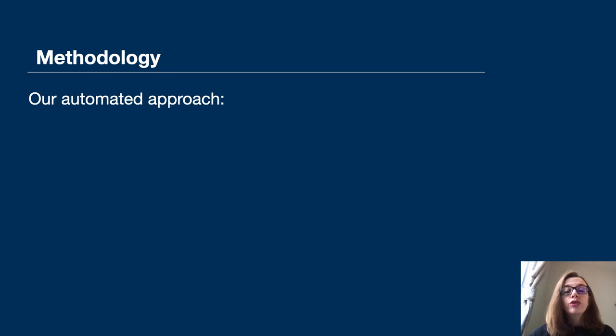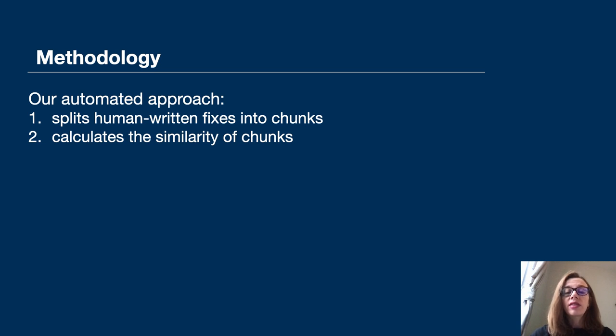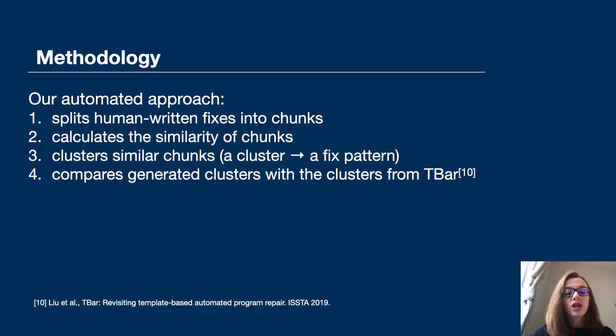In order to generate fix patterns, compare them, and propose new fix patterns, our automated approach first splits human written fixes into chunks, then calculates the similarity of chunks, clusters similar chunks, where each cluster is a fix pattern, and it compares generated clusters with the clusters extracted from the work published as an APR tool called T-bar.